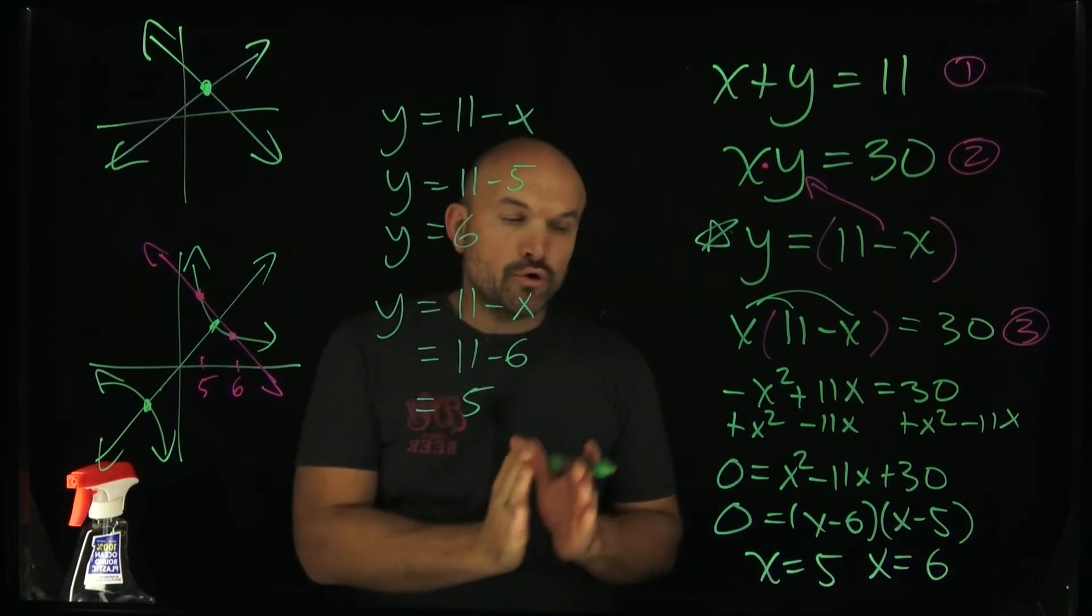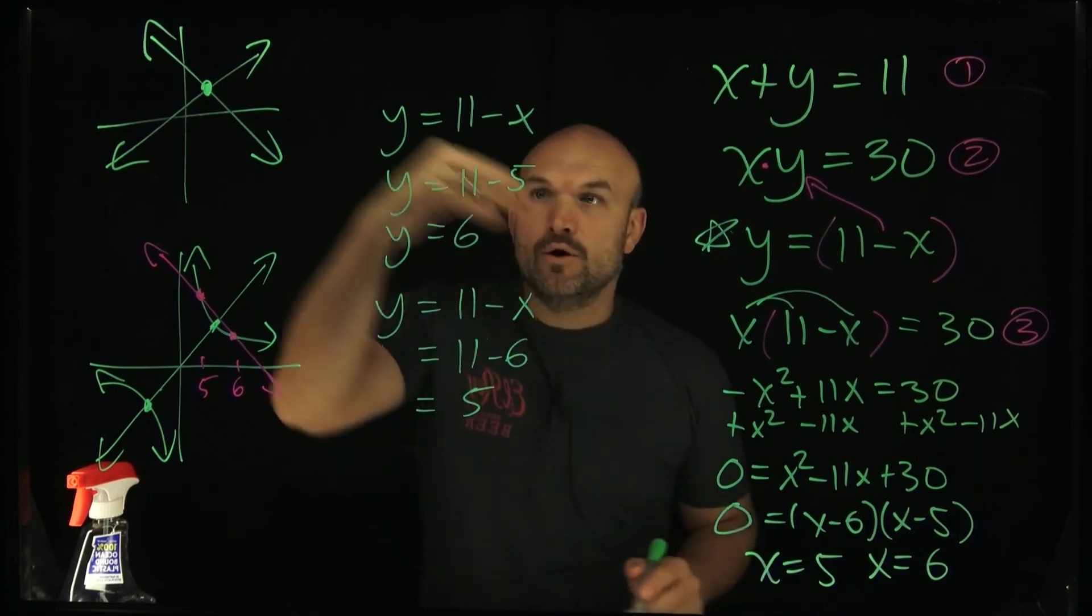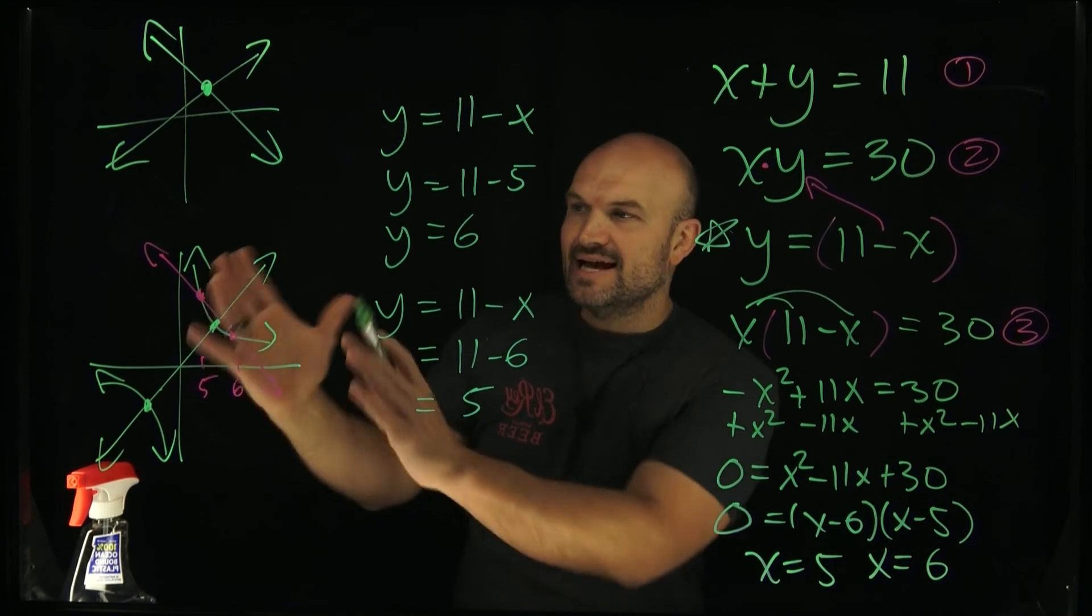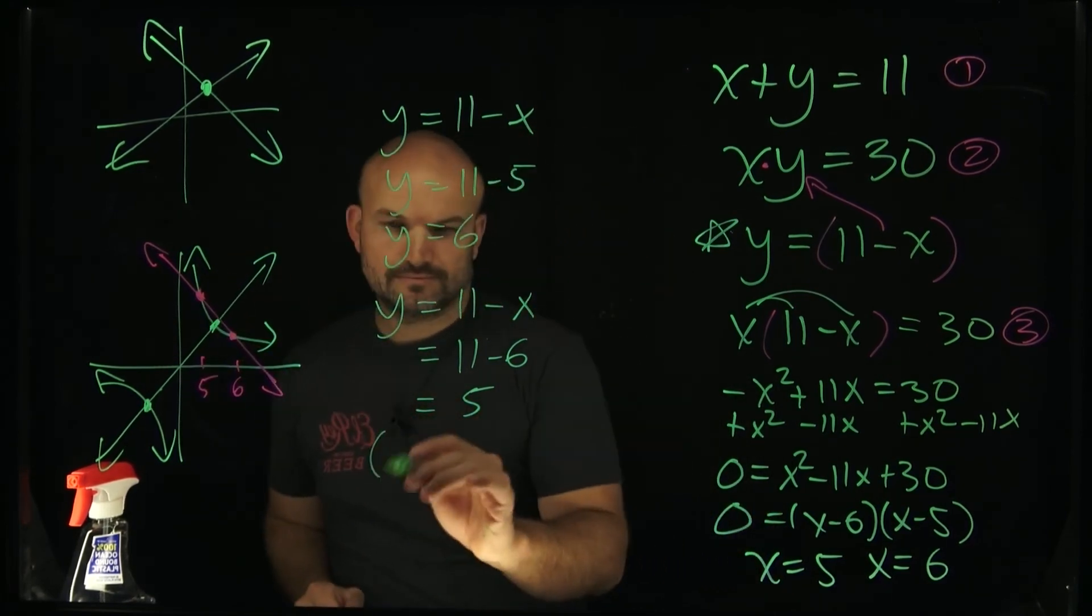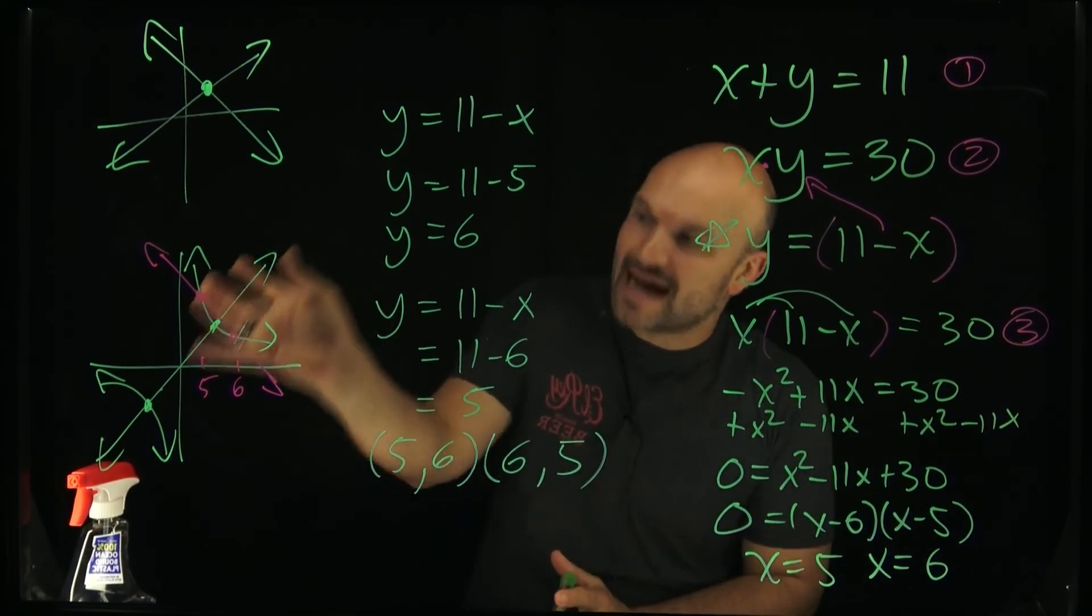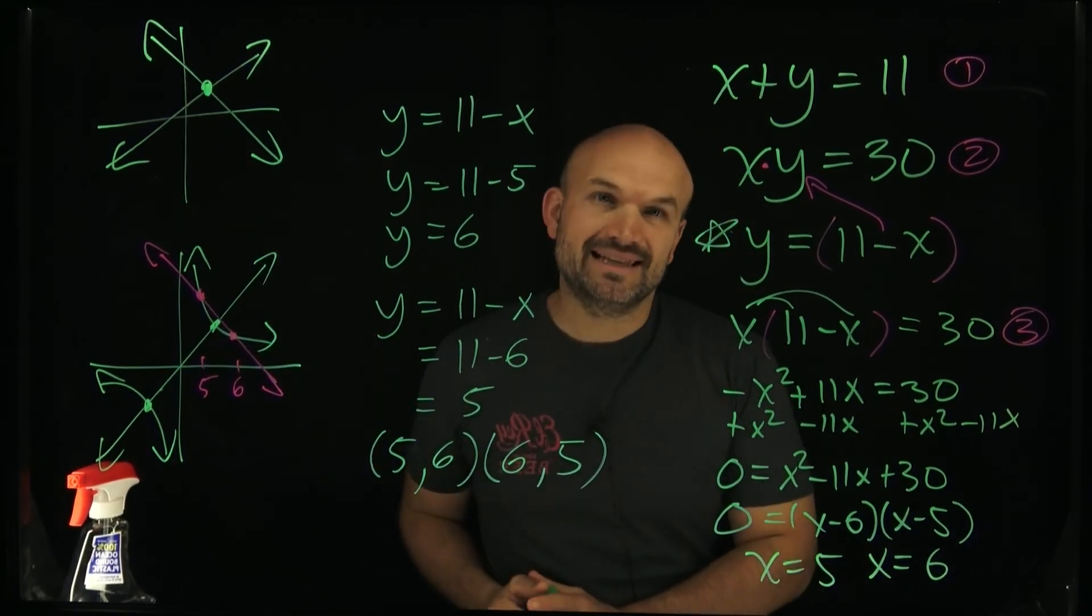And now you can see I have two coordinate points. When x is equal to 5, y is equal to 6. When x is equal to 6, y is equal to 5. So now I can represent these here as my coordinate points. And those are going to be the coordinate points of the solutions. That is going to be where the hyperbola is going to intersect my linear equation.